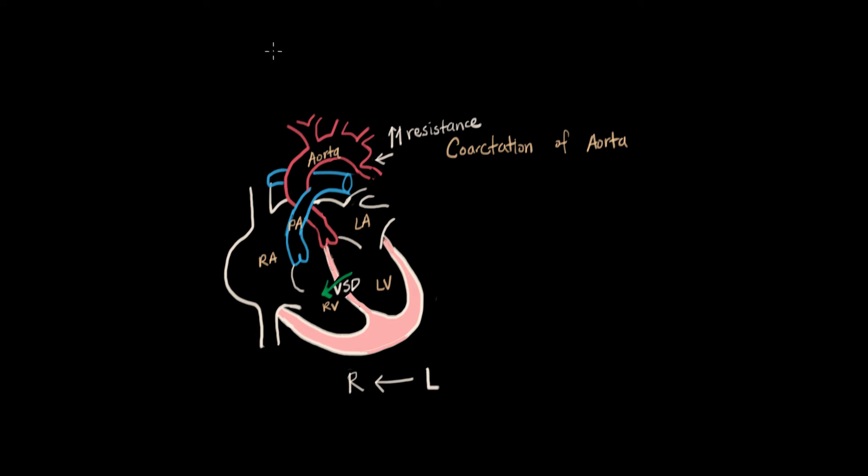So let's say we don't fix this coarct. No surgery. This child grows up. They'll have kind of compromised flow of blood into their system, but they can survive. Now all the while we have left to right shunting. We can live with that.